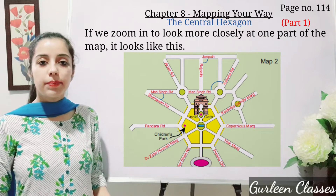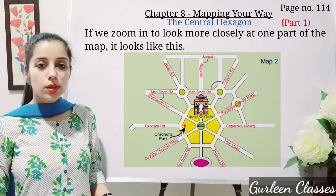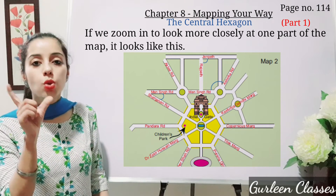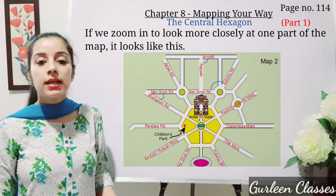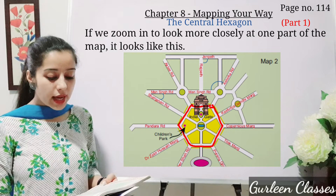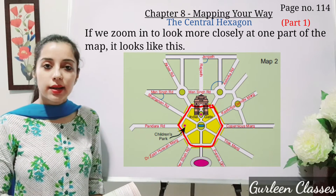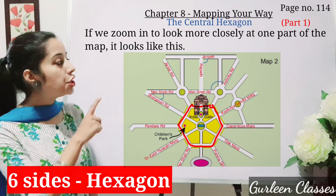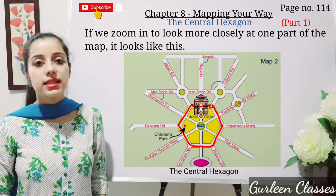Next topic: the Central Hexagon. This topic is in your book, page number 114. If we zoom in to look more closely at one part of the map, it looks like this — here you can see Map 2 where they have done a zoom in. The zoom-in option you might have seen on your mobile phone when you want to see something very closely. Look at the shape of the yellow area — have you seen this shape before? How many sides does it have? It has 6 sides. I told you in chapter number 2 about shapes with 6 sides — it is called a hexagon. This place is called the Central Hexagon.